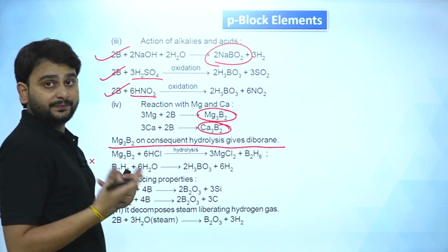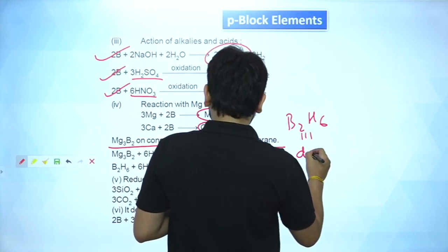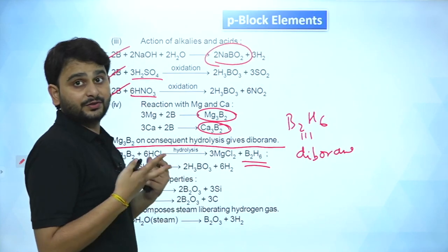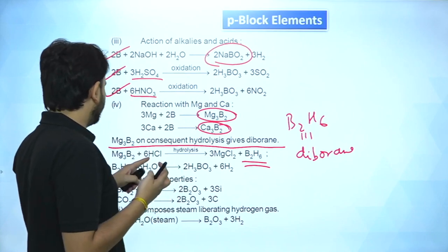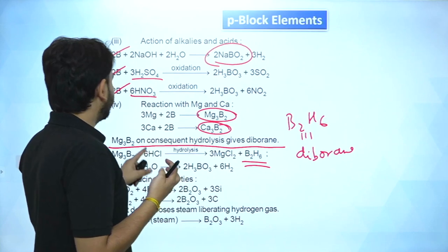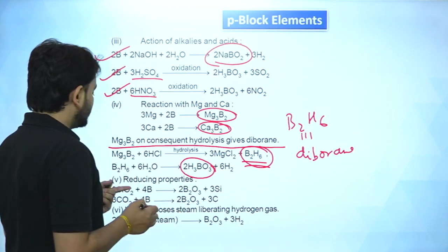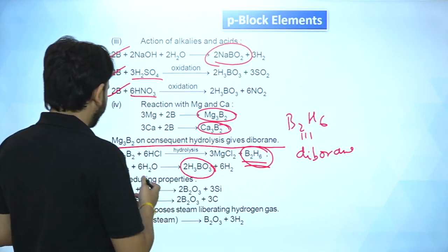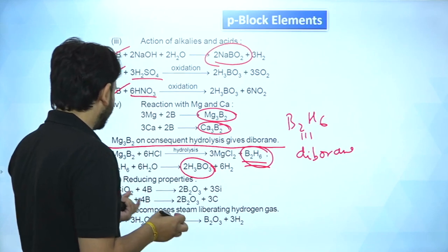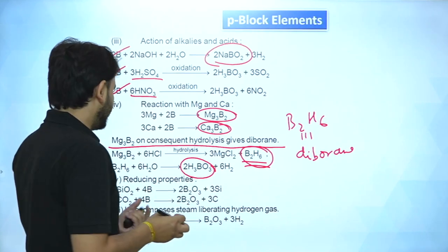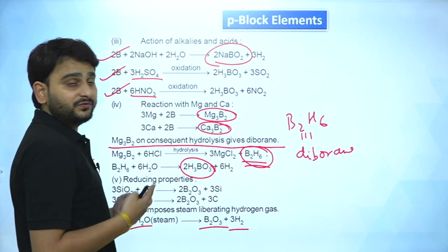When Mg₃B₂ is hydrolysed in the presence of acid, it gives B₂H₆ (diborane). When diborane is treated with water, boric acid is formed. Regarding reducing properties: boron acts as a reducing agent — it can reduce SiO₂, and it reduces CO₂ to give B₂O₃ and carbon. It also decomposes steam, liberating hydrogen gas.